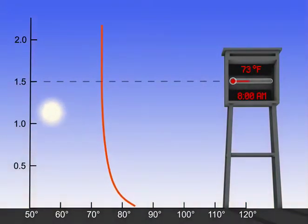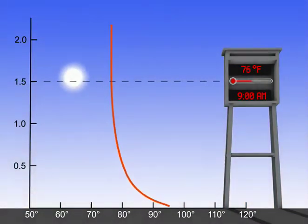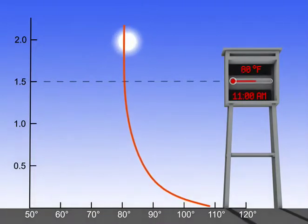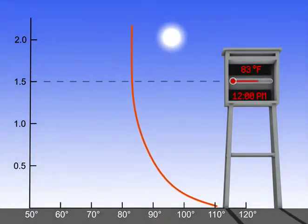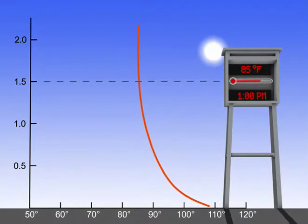On a clear, calm day, the air in contact with the surface normally reaches its highest temperature at noon when the sun's energy is most intense. However,